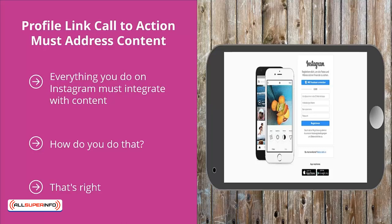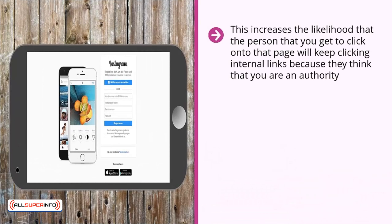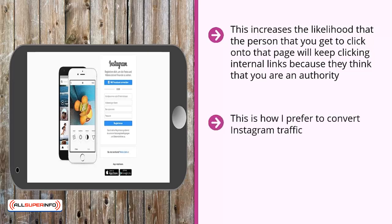Instead, when you feature a consumer guide or a list article that addresses common questions about your niche, you can build credibility, answer questions, and address needs. This increases the likelihood that visitors will keep clicking internal links because they view you as an authority. Eventually, get them to click a link to your email list — that's how I prefer to convert Instagram traffic. Rather than dumping them into a sales page, get them on your mailing list and let that list do the heavy lifting of converting members into paying customers over time.